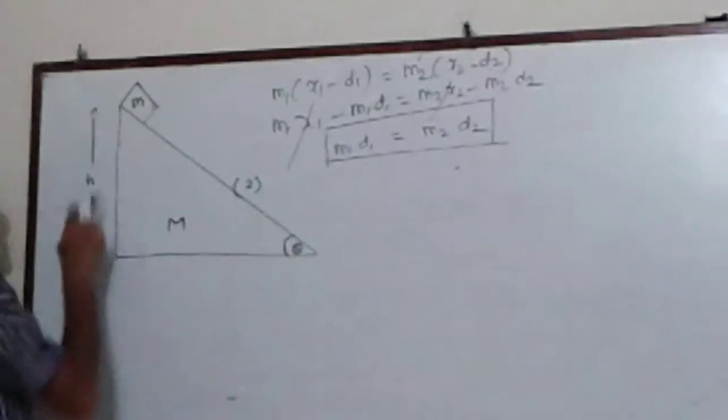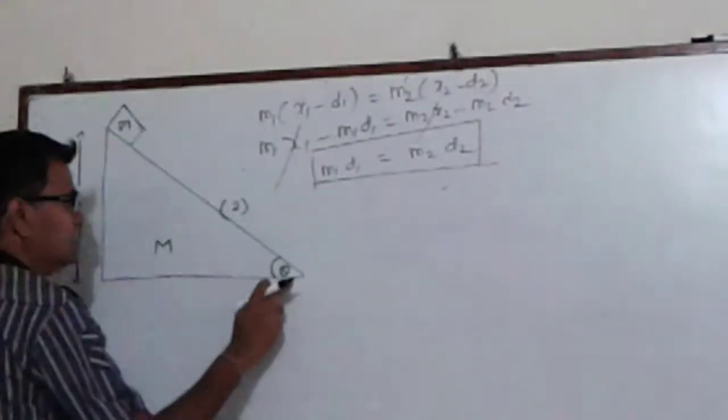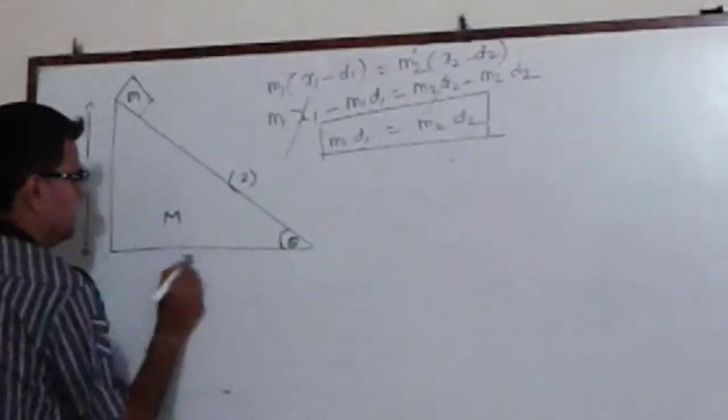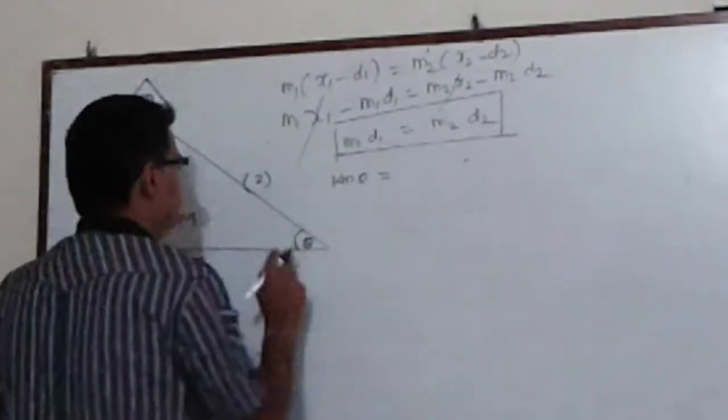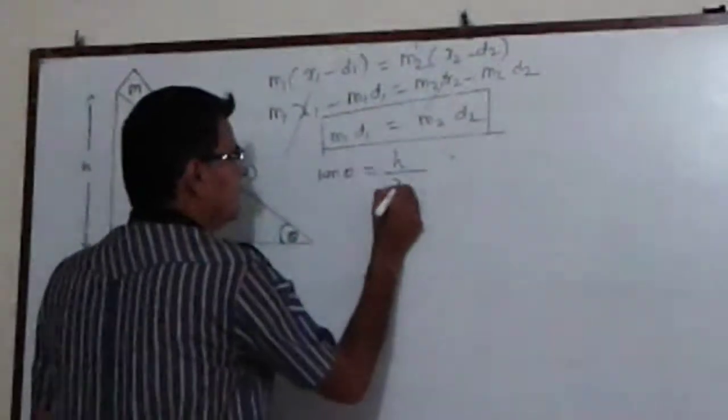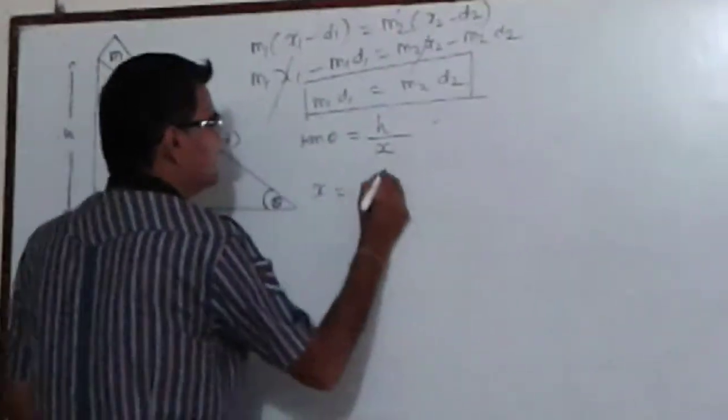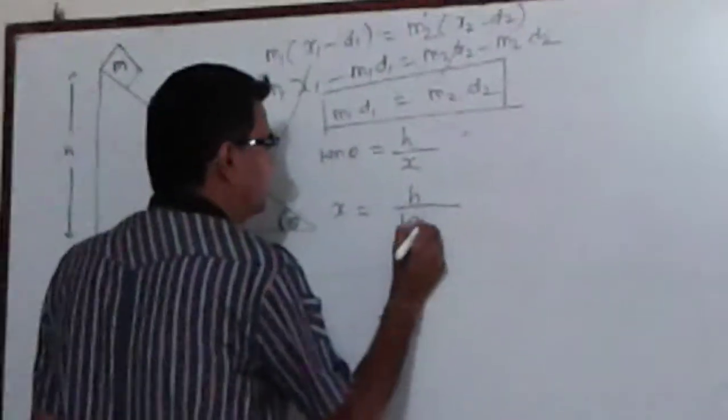As this distance is h and this angle is θ, suppose we take this as x. We know that tan θ is h upon x, so the total distance x is h upon tan θ.